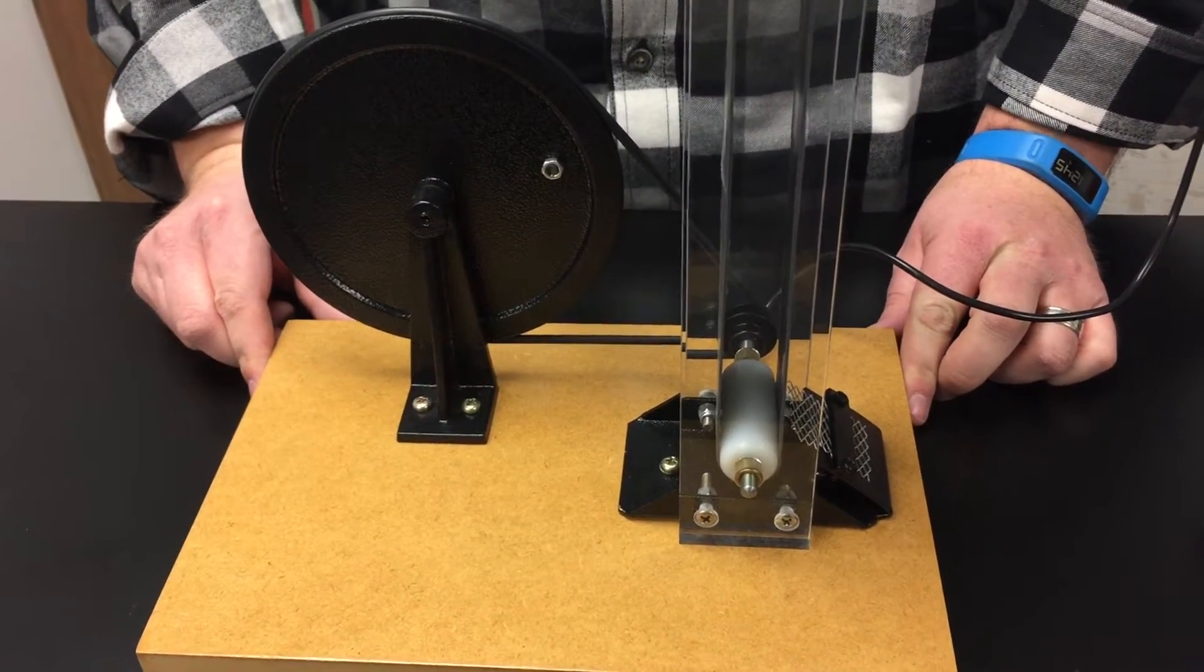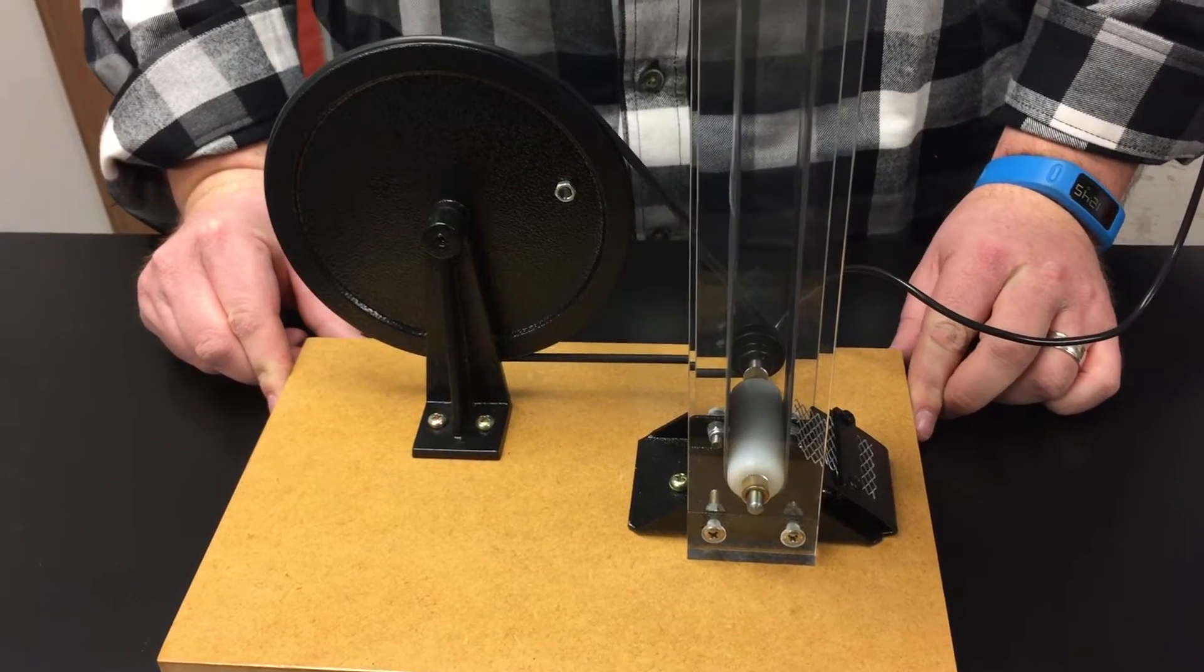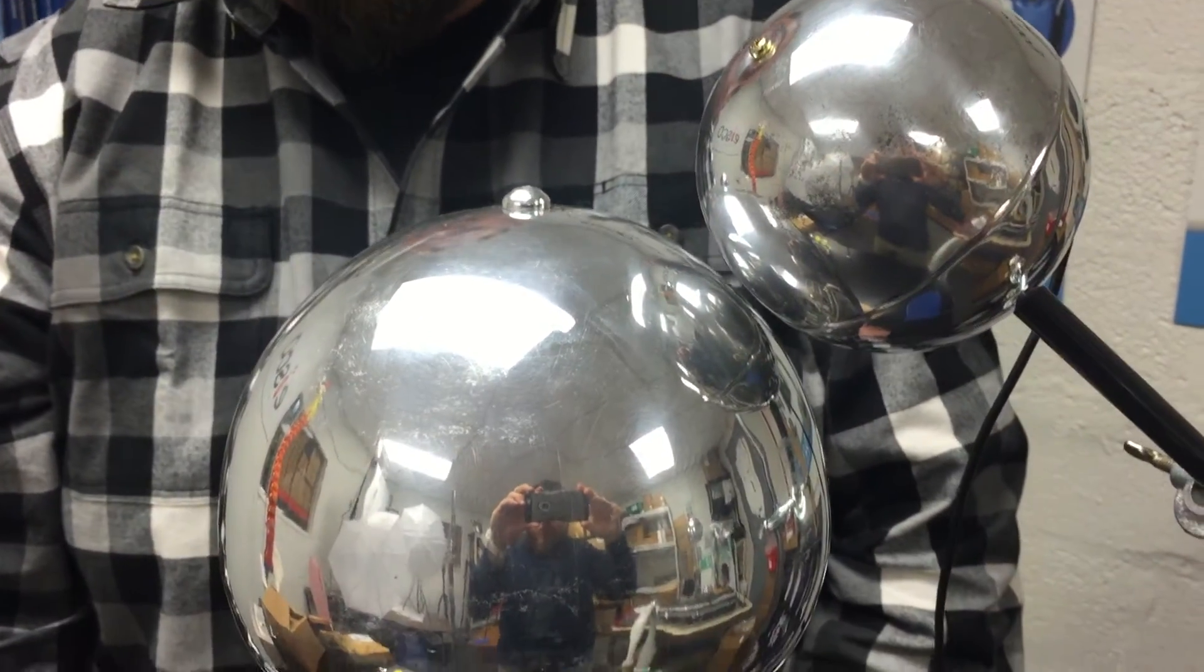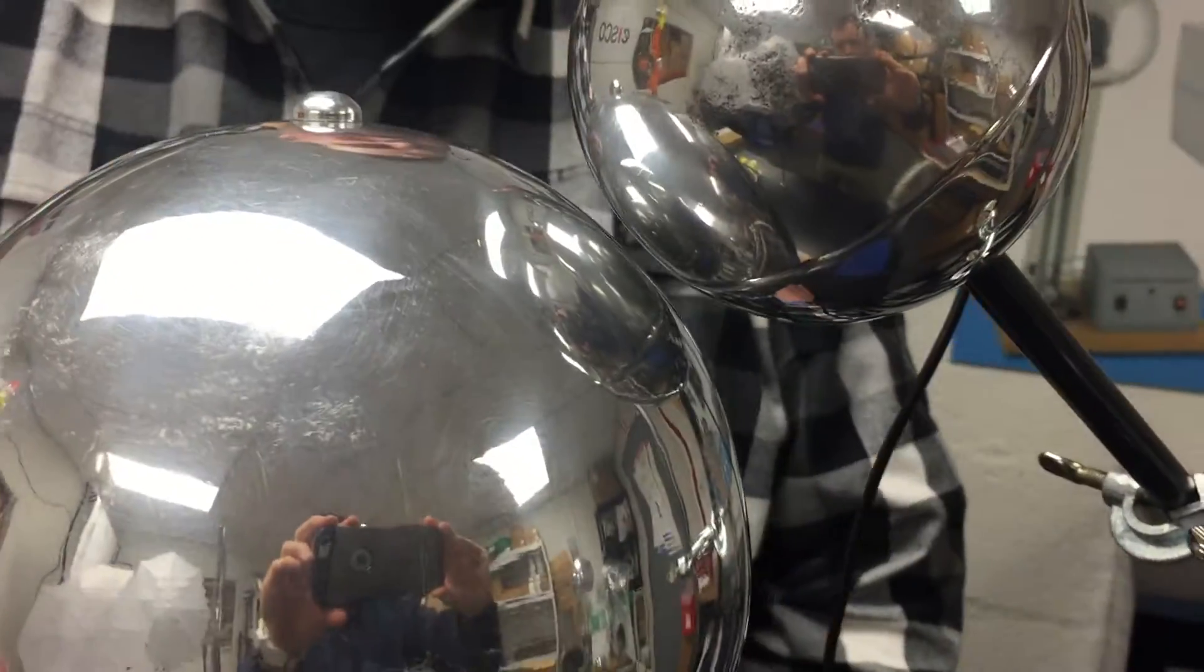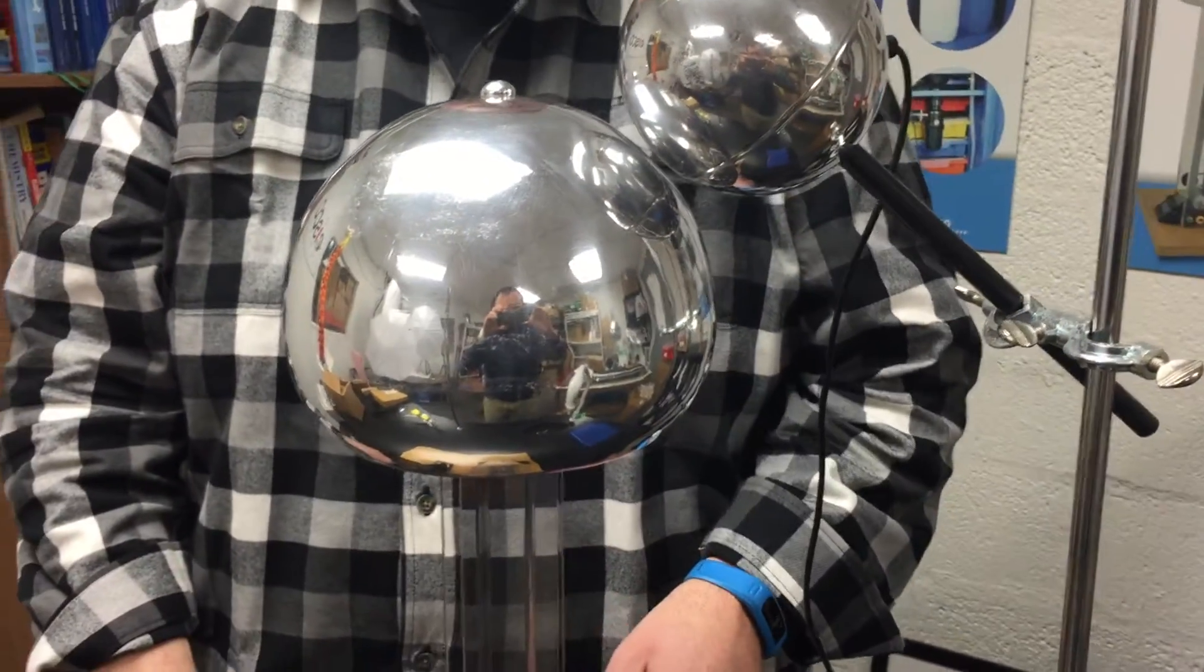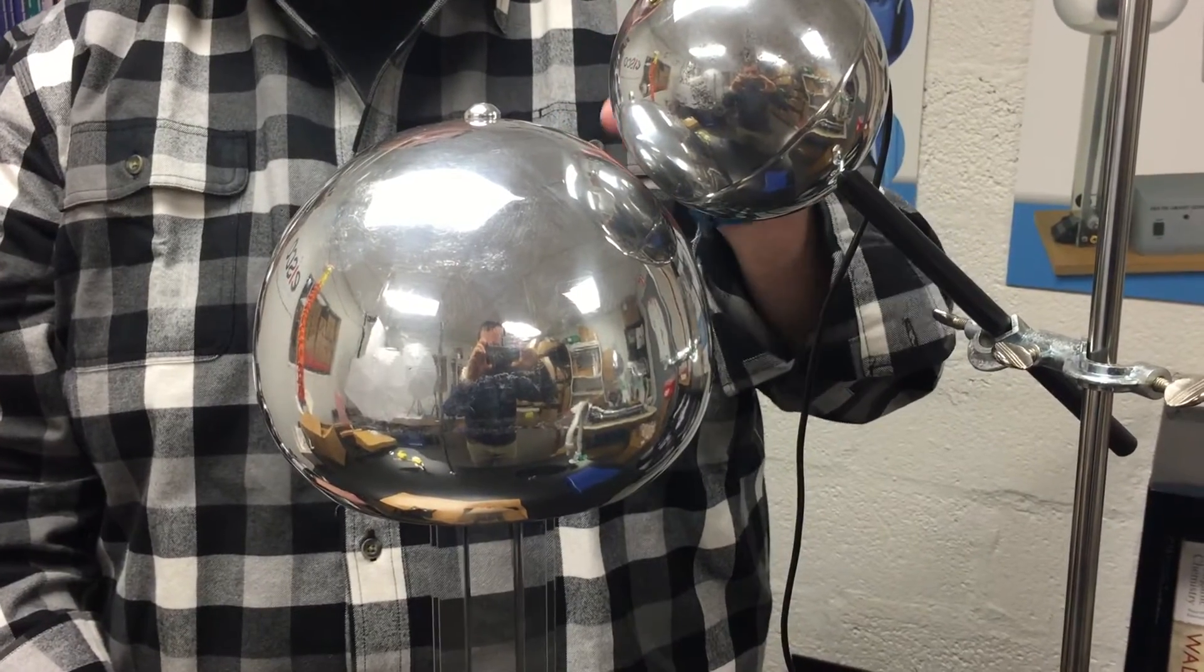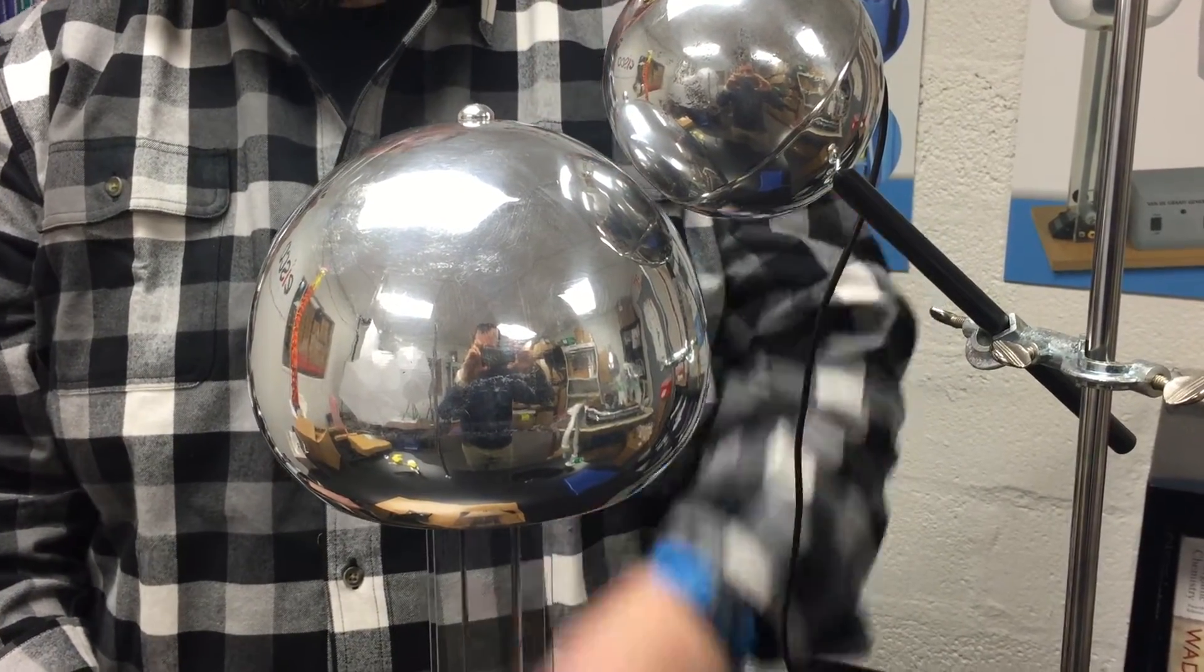So the next thing I'm going to do is position the discharge wand very close to the Van de Graaff up here. And the reason you need the discharge wand close to the top of the Van de Graaff is this helps draw the current from the rollers to the belt to the dome and then arc between the discharge wand and the Van de Graaff.